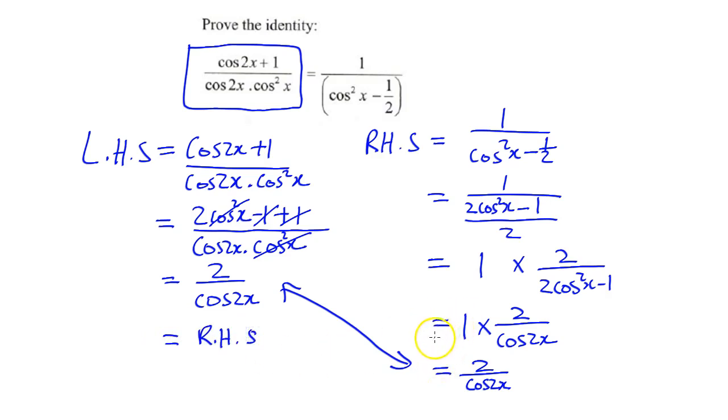That's one of the ways we can prove an identity. If we recap, what's the first thing we must do? We must let the left hand side equal to the more complex side and simplify as far as possible. Remember that cos 2x has three expansions: 2 cos squared x minus 1,